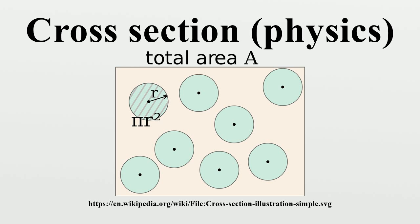It is common to omit the differential qualifier when the type of cross-section can be inferred from context. In this case, sigma may be referred to as the integral cross-section or total cross-section. The latter term may be confusing where multiple events are involved, since total can also refer to the sum of cross-sections over all events. The differential cross-section is an extremely useful quantity in many fields of physics, as measuring it can reveal a great amount of information about the internal structure of the target particles. For example, the differential cross-section of Rutherford scattering provided strong evidence for the existence of the atomic nucleus.